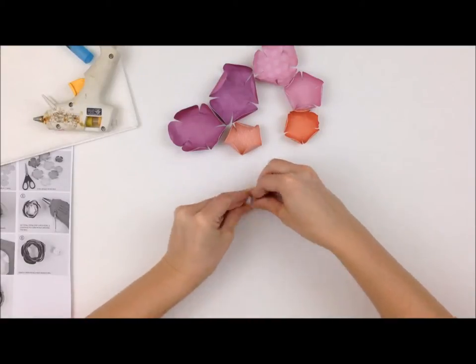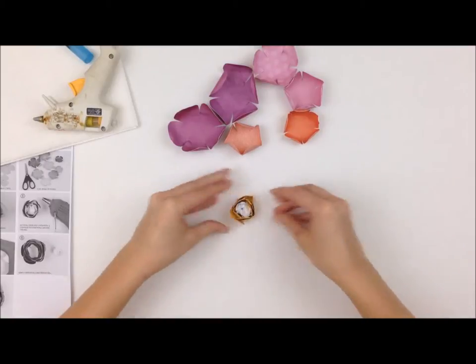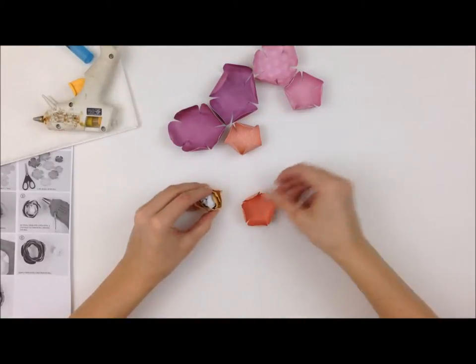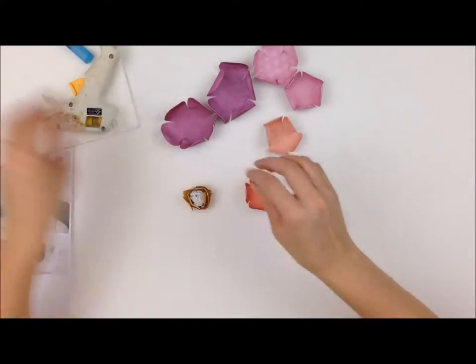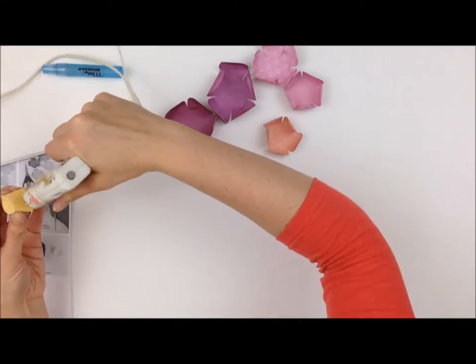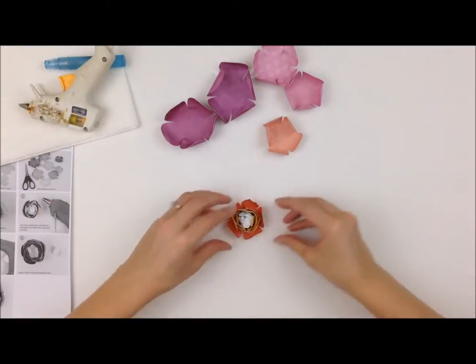You want to make sure that you are shifting each layer around the flower a little bit so the petals don't all line up exactly. That could be a cool look but you're not going to get a very natural look with your flower if you do it that way.